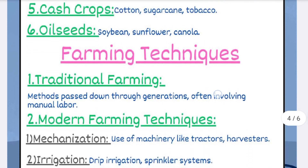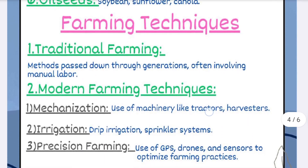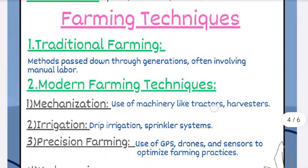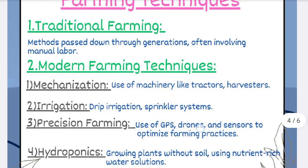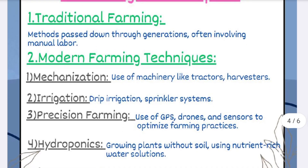The next topic is farming techniques: number one, traditional farming; and number two, modern farming techniques — under which we have mechanization, irrigation, precision farming, and hydroponics.